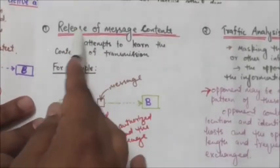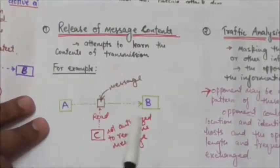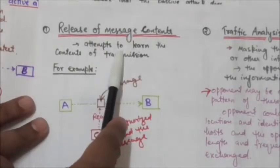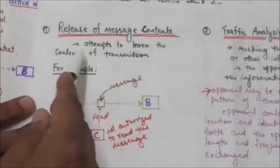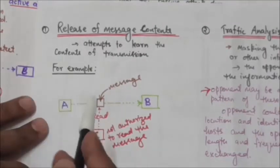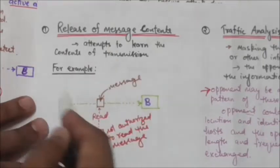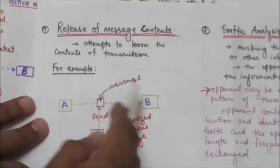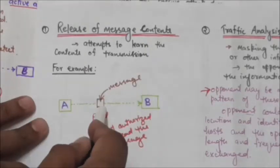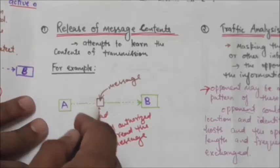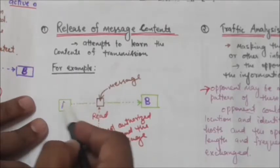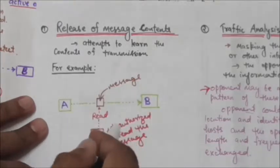In the case of release of message contents, the opponent or attacker attempts to learn the contents of a transmission. For example, user A transmits a message to user B containing some confidential or sensitive information. Suppose there is another user C who is not authorized to read the message, but this user C attempts to read the content — such an attack is called release of message contents.